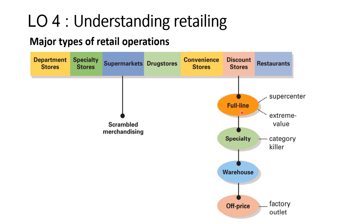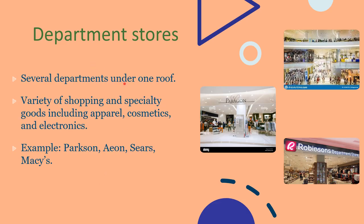In discount stores there are four types: full-line stores (also known as supercenter or extreme value stores), specialty discount stores, warehouse-type stores, and factory outlet or off-price stores. Specialty discount stores are category killers — for example, Mr. DIY sells at discounted prices specializing in household items. They're called category killers because when such a shop opens, other shops are affected in terms of their sales, as most people prefer to buy at this particular discount store.